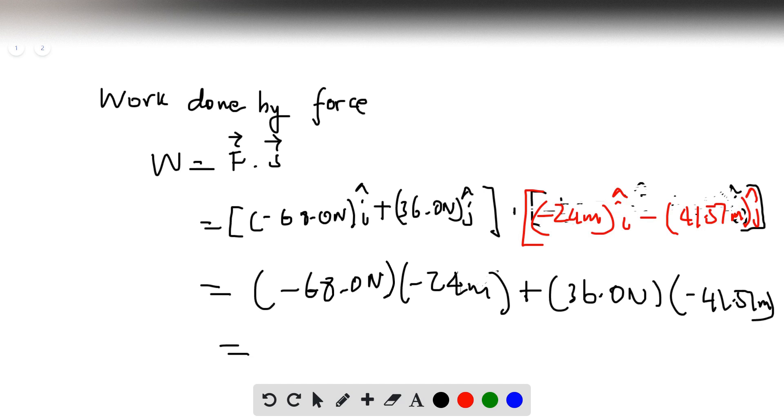Our final answer becomes putting those two together: 68 times 24, that gives us 1632 joules. Remember, it's positive because this one is negative and that's negative. And then 36 times 41.57, that's negative 1496.52. When we subtract those two together, we get 135.48 joules.